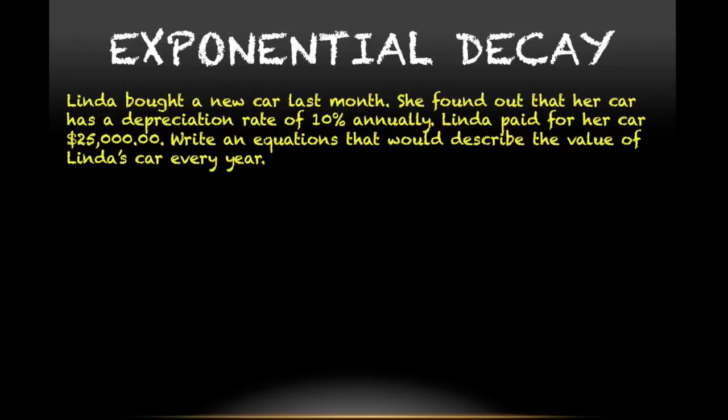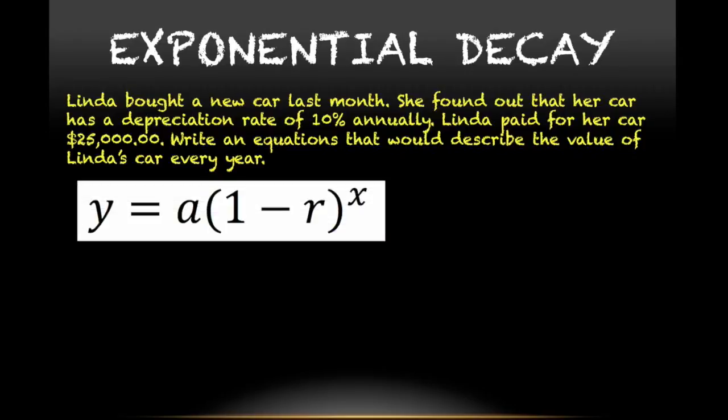So to start, how do I know that this is exponential decay? Well, this is depreciating. This is diminishing, decreasing. And the rate, again, is given to you as a percent. That's how you know. So we will still use the equation that we looked at before, with a minus instead of a plus because this is decay.